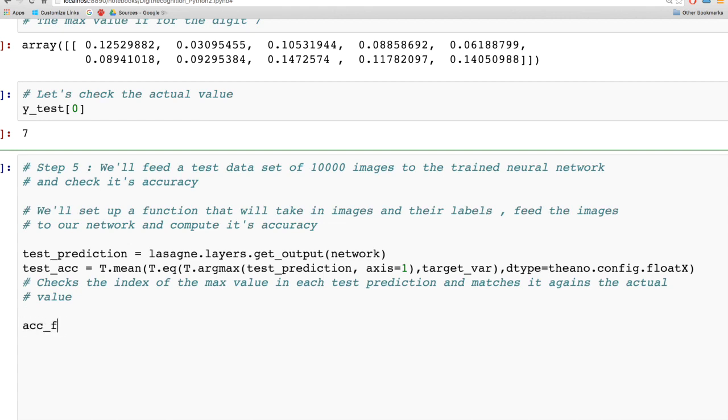Here we're setting up a function that takes an input variable and its labels (input_var and target_var), an array of images and labels, and returns the accuracy.